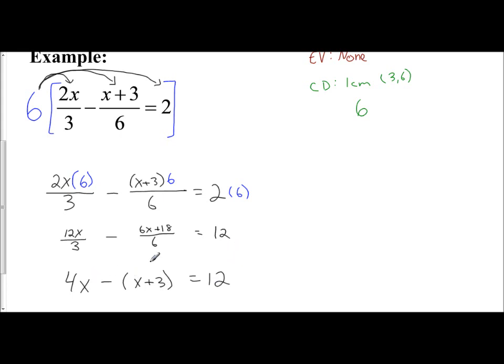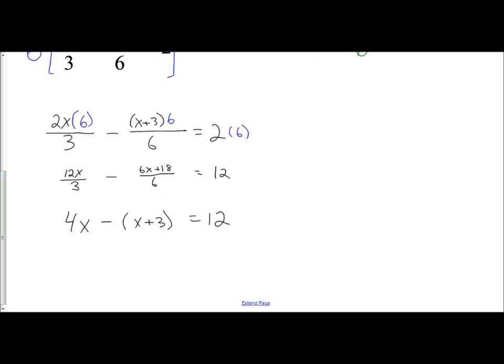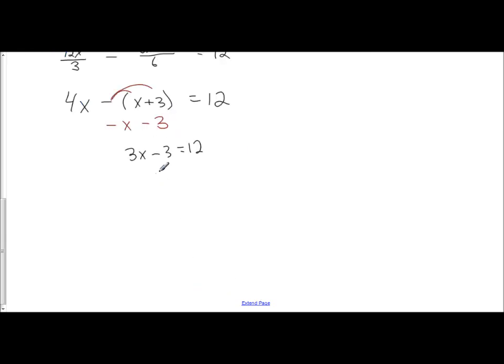Well, now look at this. Our denominators disappeared. That was the whole point of multiplying through by our common denominator, is you will no longer have fractions. I have 4x minus the quantity x plus 3 equals 12. And so I can solve that now. What I'm going to do is distribute the minus sign. So it's negative x minus 3. And then combine like terms. 4x minus x is 3. So 3x minus 3 equals 12. I would add 3 and get 3x equals 15. And then divide by 3 to get x equals 5.